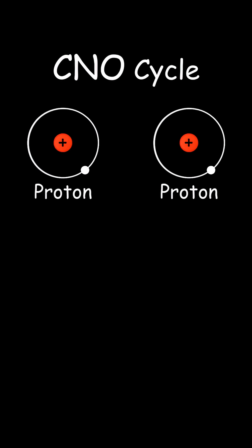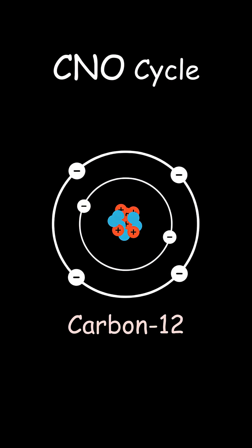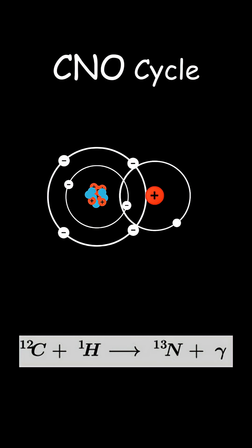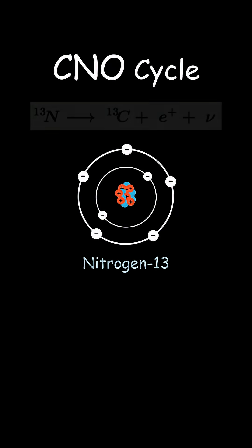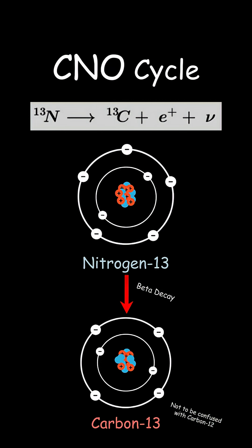In this cycle, instead of two protons fusing directly, a carbon-12 nucleus acts as the initial catalyst. The carbon-12 first captures a proton forming nitrogen-13, which then decays into carbon-13 by emitting a positron and a neutrino.